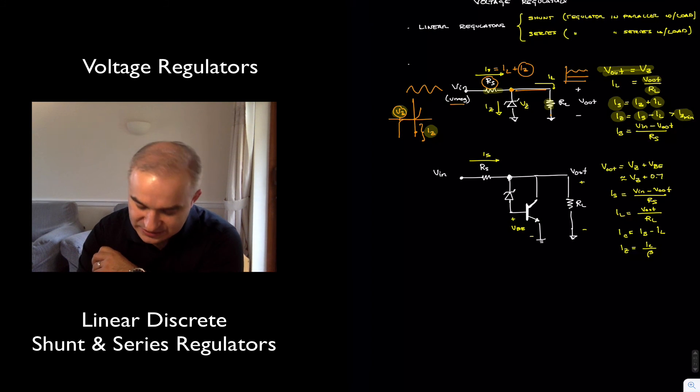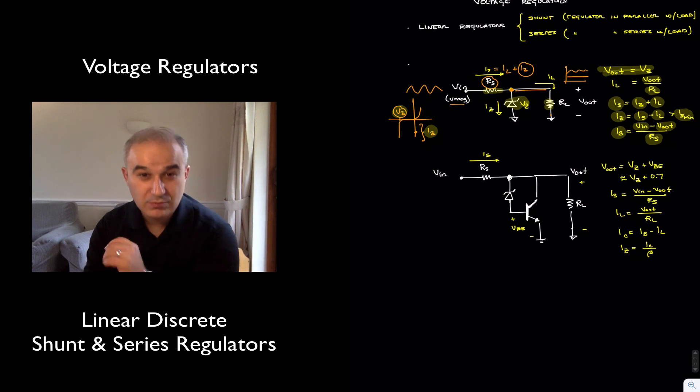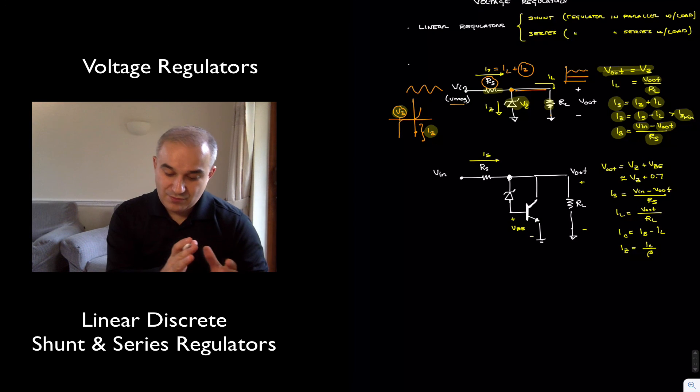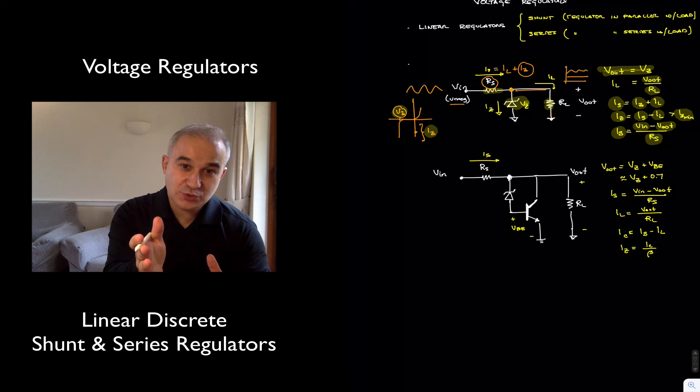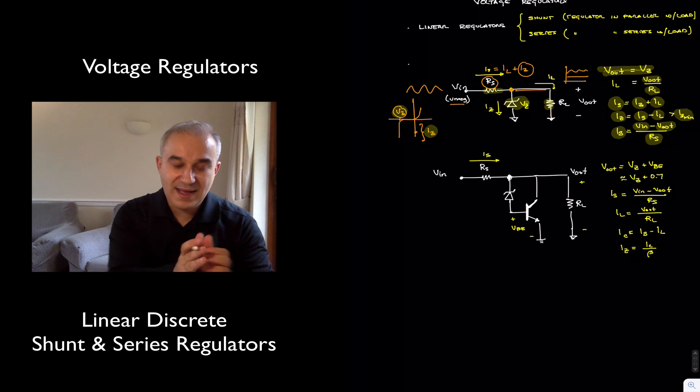So, the design is simple. For example, we have an unregulated input, we know what the V output is, which is the V Zener here, and we just choose RS to make sure that we provide the load current as well as bias the Zener.